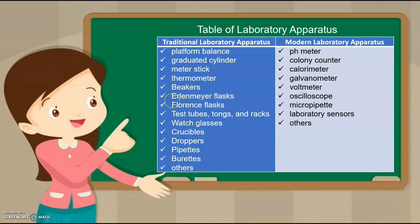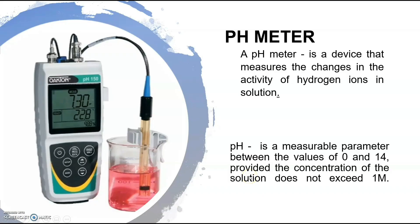Here is the table of laboratory apparatus: the traditional laboratory apparatus and the modern laboratory apparatus. Last time, we discussed the different traditional laboratory apparatus such as platform balance, graduated cylinder, meter stick, thermometer, and beakers, among others. Now let's talk about the different modern laboratory apparatus such as pH meter, colony counter, calorimeter, galvanometer, voltmeter, oscilloscope, micropipet, laboratory sensors, and others. Let's start with the pH meter.